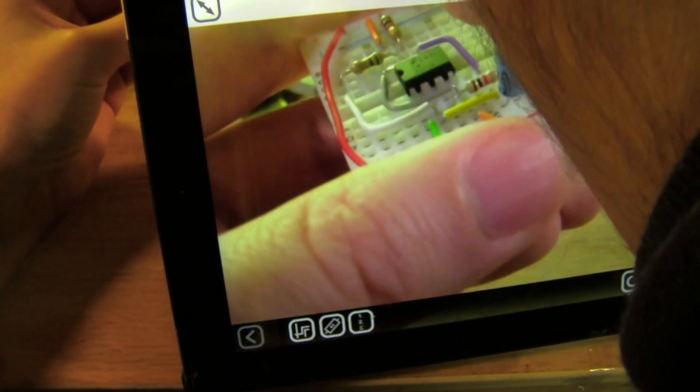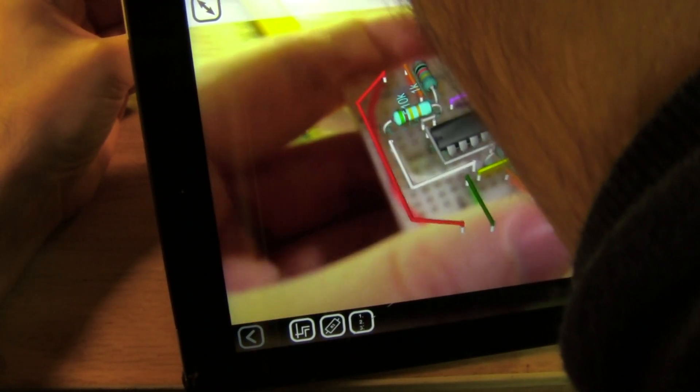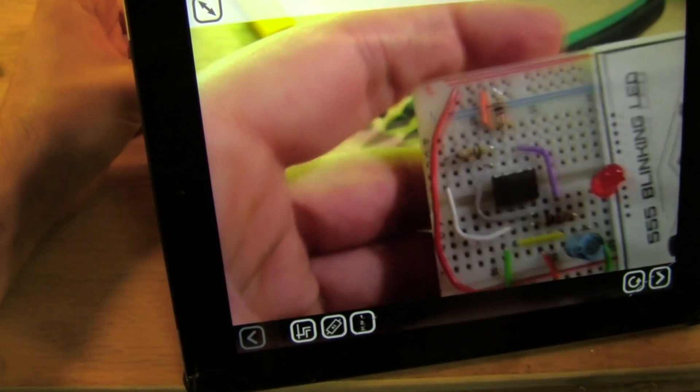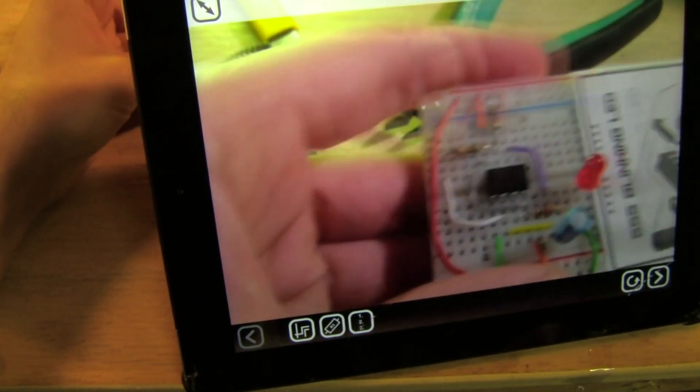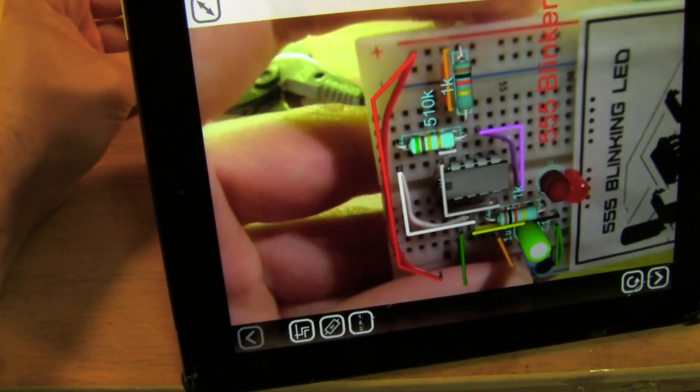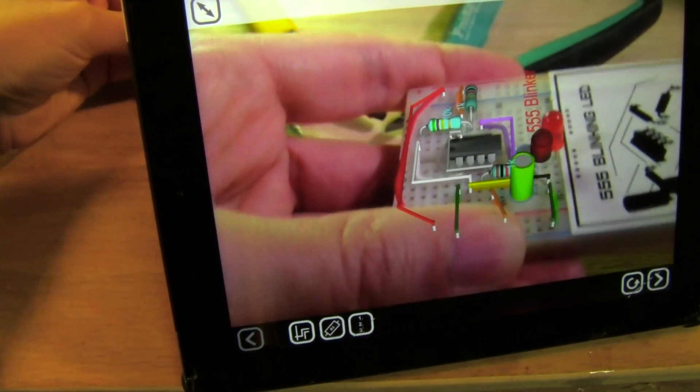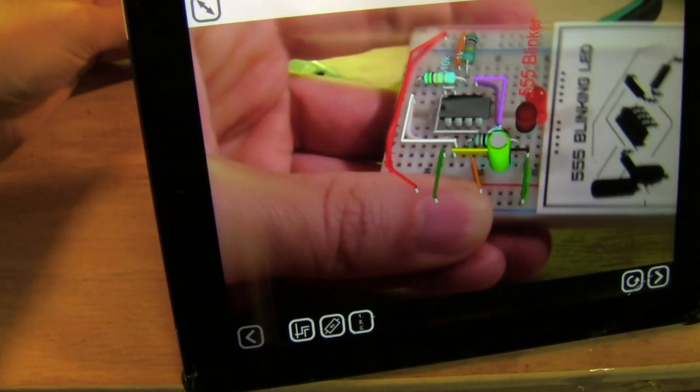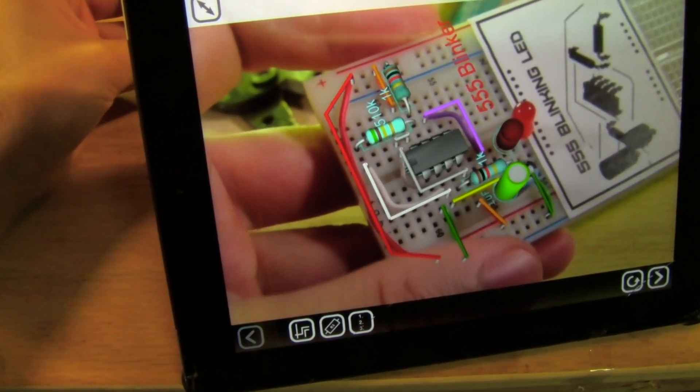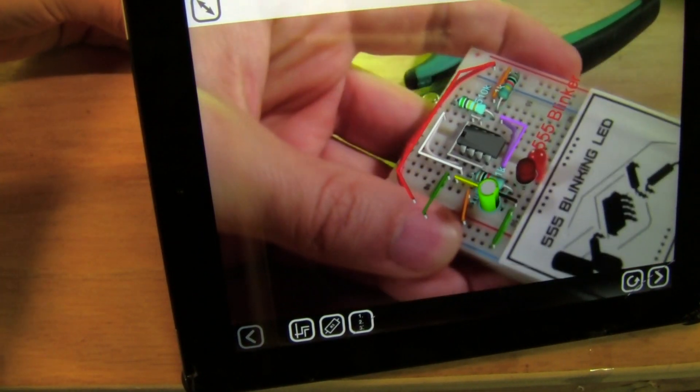I'm going to move this LED one spot away from where it should be. So now you can see it's pretty obvious that something's in the wrong spot. This is also a good way to preview the circuit before you start building anything.